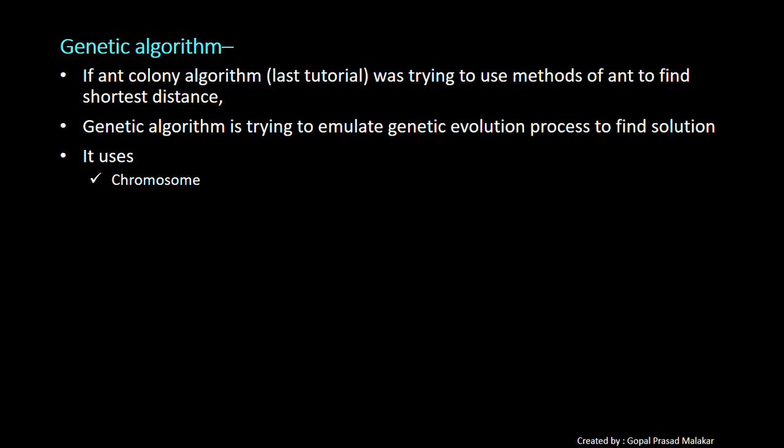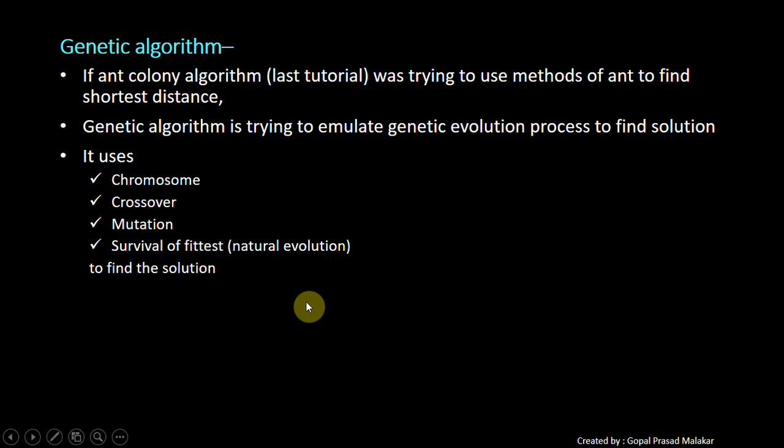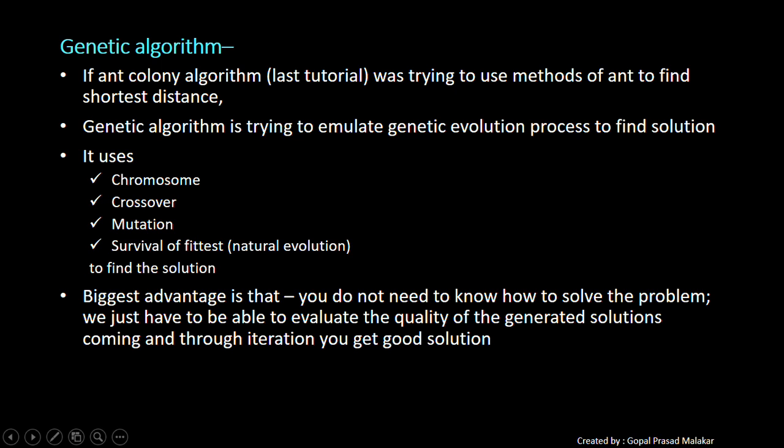This uses chromosome, crossover, mutation, survival of the fittest, or natural evolution process to find good solution. The biggest advantage is that you don't really need to know how to solve for the optimal solution. You just need to know how to evaluate the quality of the solution, and through an iterative process you get good solution.